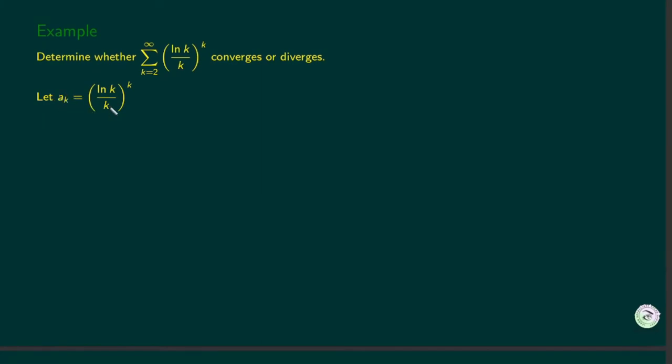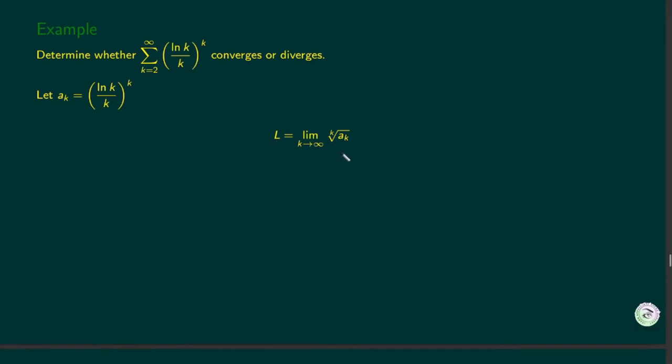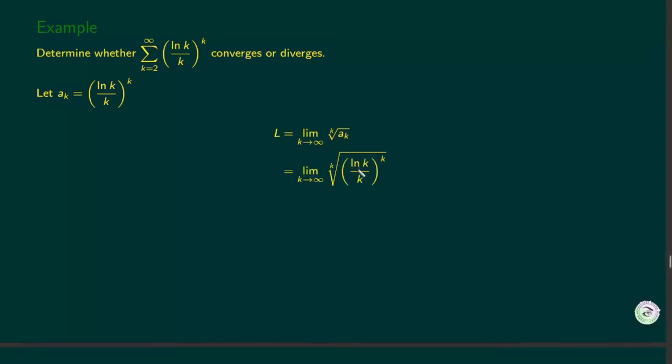Let us label this by ak. Then the limit of the kth root of ak, that is what we are looking for. So we are plugging in the formula for ak here. Then this kth root cancels out with the exponent k here.